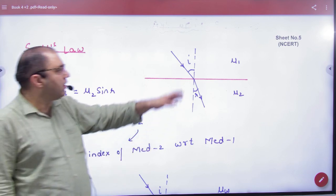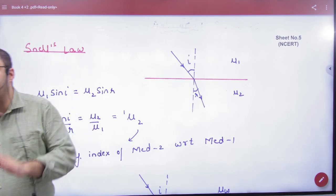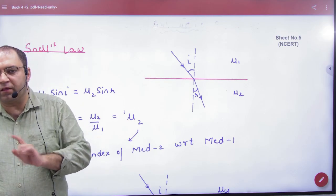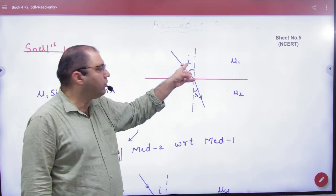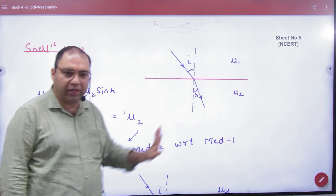Angle of incidence i, angle of refraction r, refractive index μ1 and μ2. Snell's law states: μ1 sin i is equal to μ2 sin r.